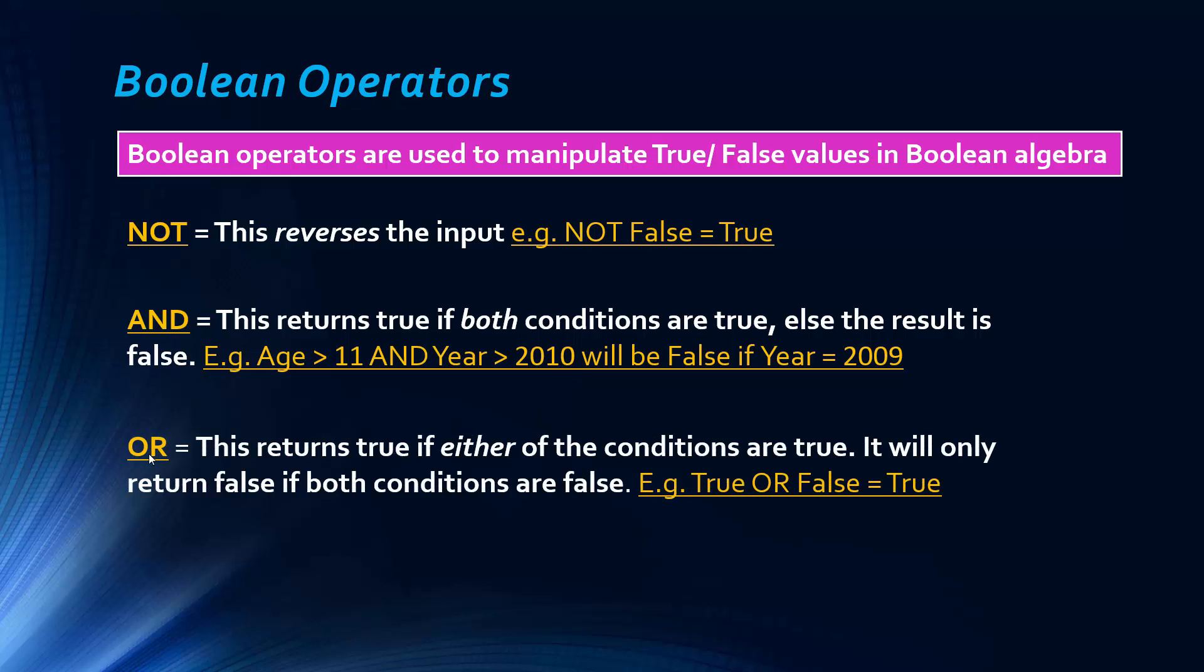So OR returns true if either of the conditions are true. So it's slightly more flexible than the AND operator. So it will only ever return false if both conditions are false. So true OR false would be true because one of the conditions is true.